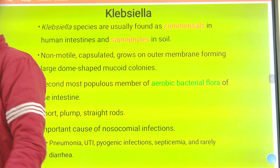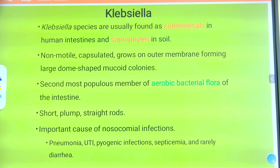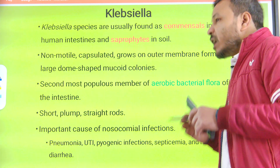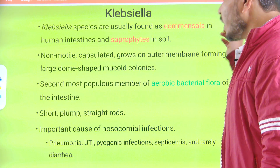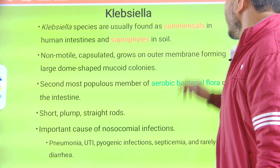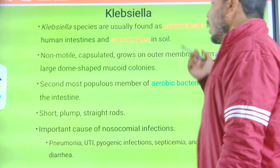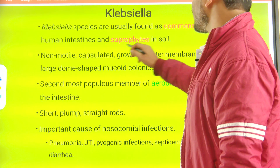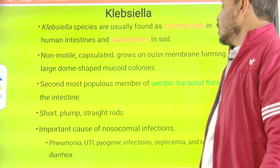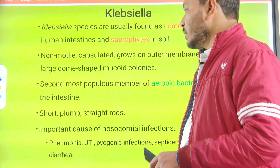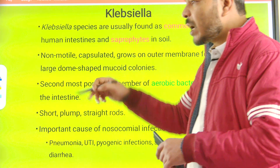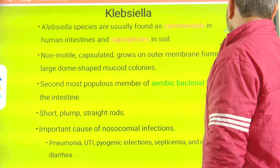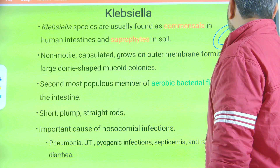Klebsiella species are usually found as commensal organisms, meaning they are normally present in our body and not going to affect us normally. But in some cases they may be pathogenic. They are present as microflora inside our body and sometimes on our skin, mainly in human intestines, and as saprophytes sometimes present in soil. Saprophytes means they are present on dead decaying matter. They are non-motile but capsulated — they have one thick mucus capsule.